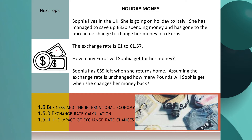Let's imagine that Sophia lives in the UK and she's going on holiday to Italy. She has saved up £330 of spending money and has gone to the Bureau of Exchange to change her money into euros. The exchange rate is £1 to €1.57. How many euros will Sophia get for the money she saved up? Pause this video and figure out how many euros Sophia would receive. Remember to write your working down.